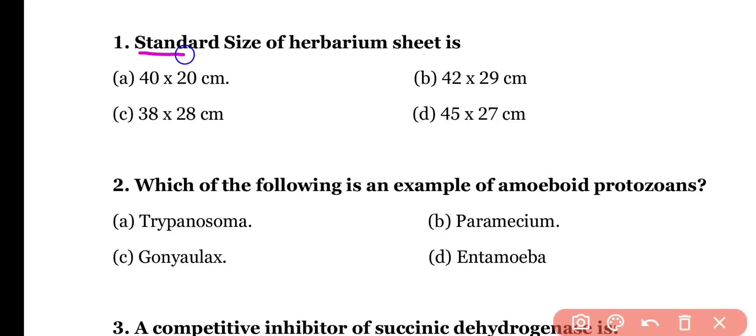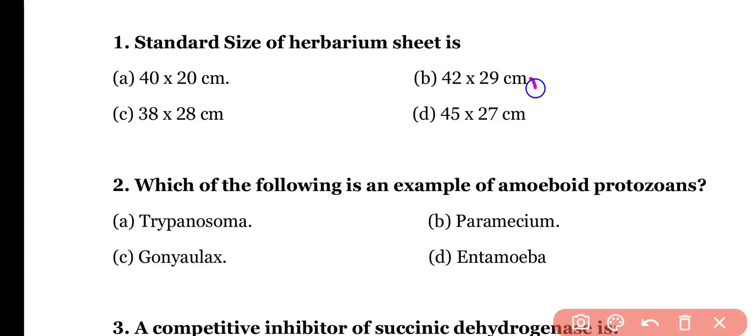Question number one: the standard size of herbarium sheet is (a) 40×20 cm, (b) 42×29 cm, (c) 38×28 cm, or (d) 45×27 cm. The correct answer is option B — 42×29 centimeter is the standard size of a herbarium sheet.